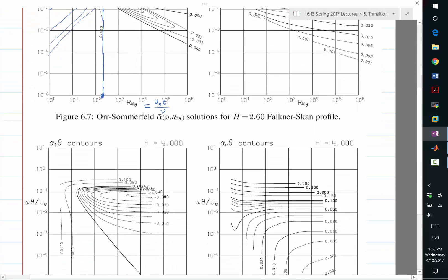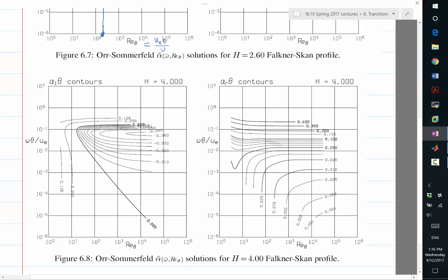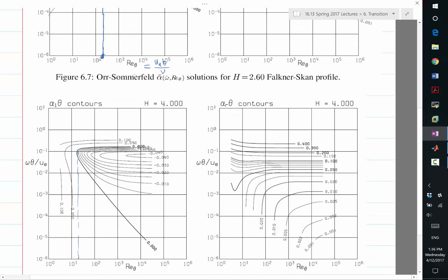If you look at a boundary layer with adverse pressure gradient, it's different. If you draw this line down here, you only need about 20 Re theta for it to be able to support some growth of unsteady waves.